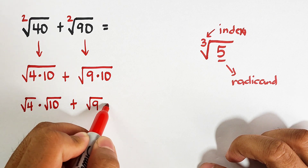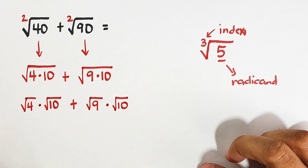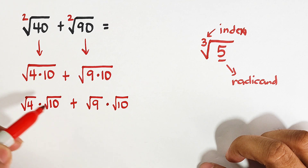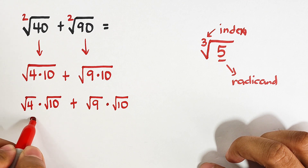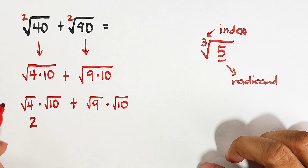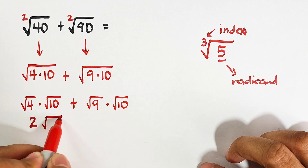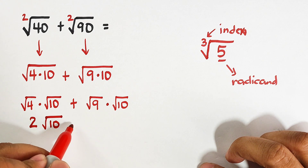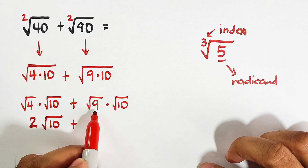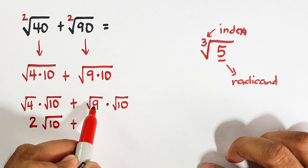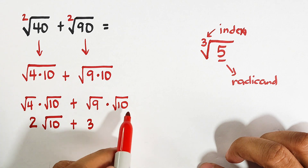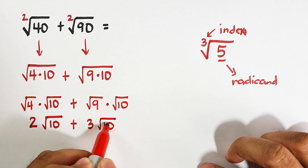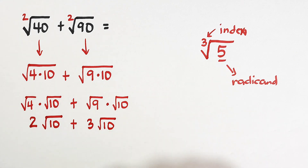As you can see, 4 and 9 are both perfect squares. We can simplify: the square root of 4 is 2. Since 10 is not a perfect square, we simply copy the square root of 10. The square root of 9 is 3, so we write 3 and copy the square root of 10.